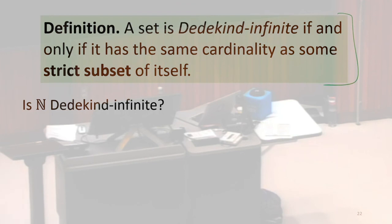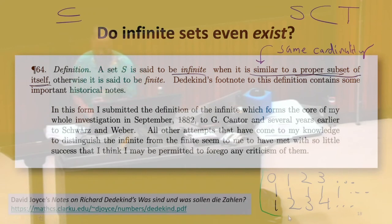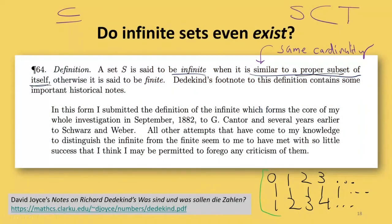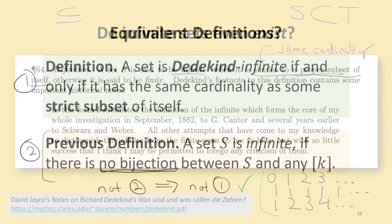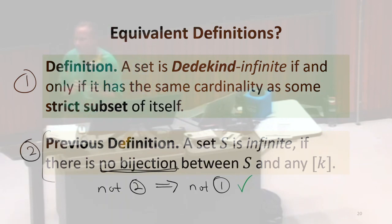And we pretty much already did. We already did with this. We showed the natural numbers has a proper subset which is the same cardinality because we have a bijection between them. So we've shown both of these properties enough to be convinced those definitions are equivalent.